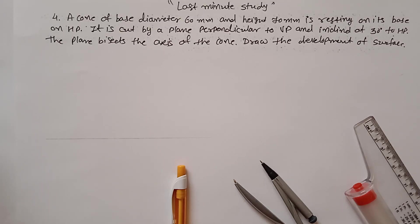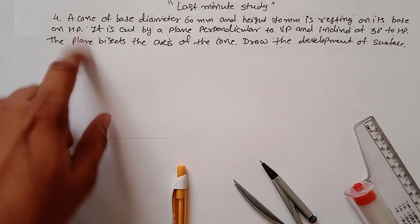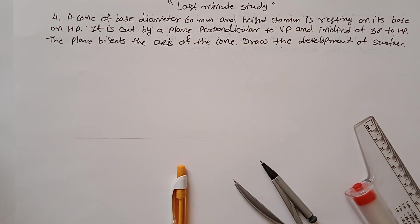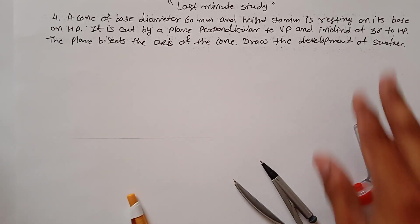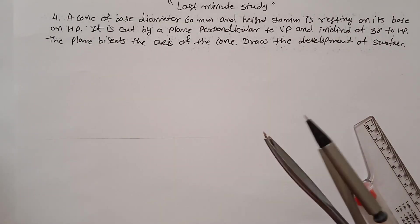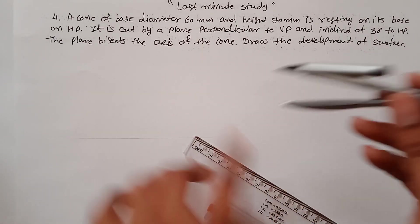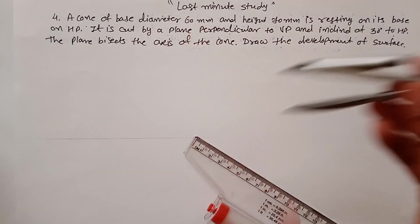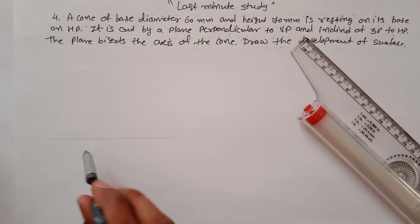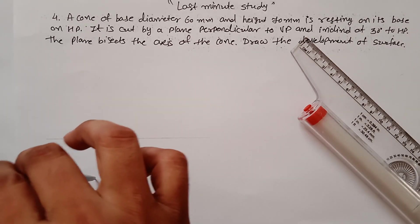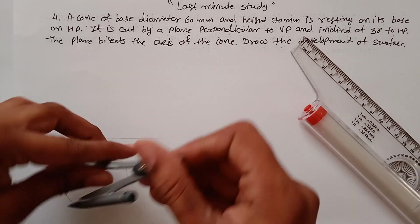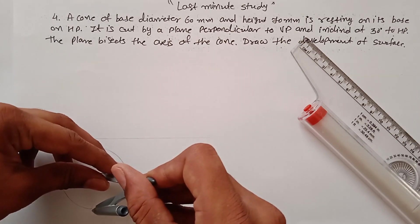Problem number four from development of surfaces, where the solid is a cone. The dimensions given are 60mm diameter and 70mm height. Since the cone is resting on the HP, first draw the top view as a circle with diameter 60mm, so measure a radius of 30mm and draw the circle. This is the top view of the cone.